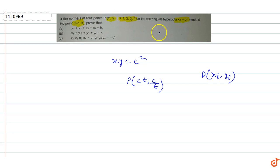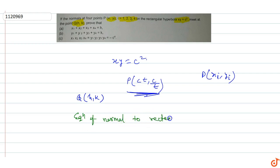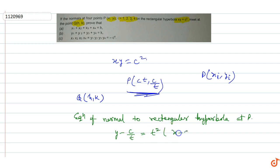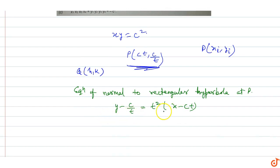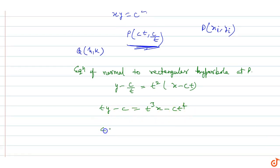The normals at four points meet at point Q(h, k). The equation of the normal to the rectangular hyperbola at point P(ct, c/t) is: y minus c/t equals t² times (x minus ct). Multiplying through by t: ty minus c = t³x minus ct⁴, giving us ct⁴ minus xt³ + ty minus c = 0. This is a fourth-degree polynomial in t.